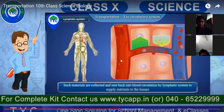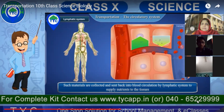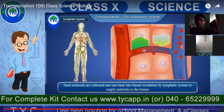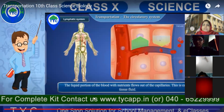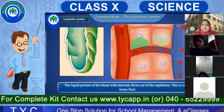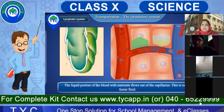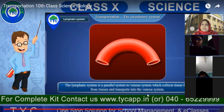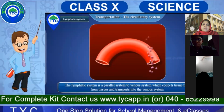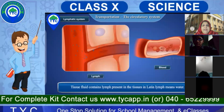Let's start from where we ended with the lymphatic system. The liquid portion in the blood with nutrients that flows in the capillary is called a fluid tissue. This fluid tissue is parallel with the venous system — it collects from tissues and transports to the venous system. We are just recapitulating what we have already completed.